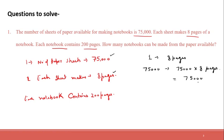How do we multiply 75,000 into 8? 8 multiplied with each zero gives 0, three times. Then 8 multiplied with 5 is 40 — write 0, carry 4. Then 8 into 7 is 56 plus 4 equals 60. So now we have 6 lakh pages.